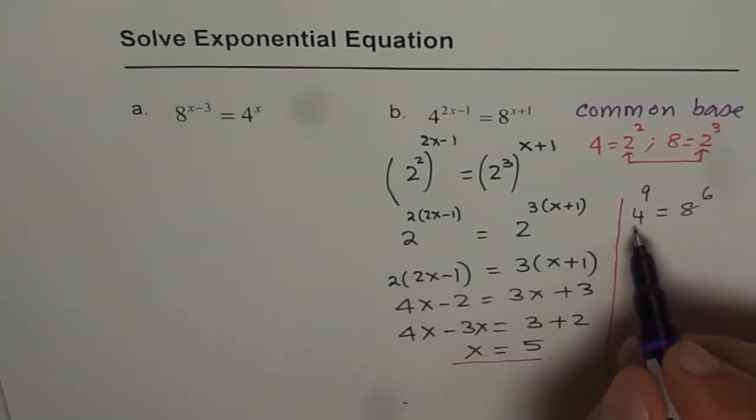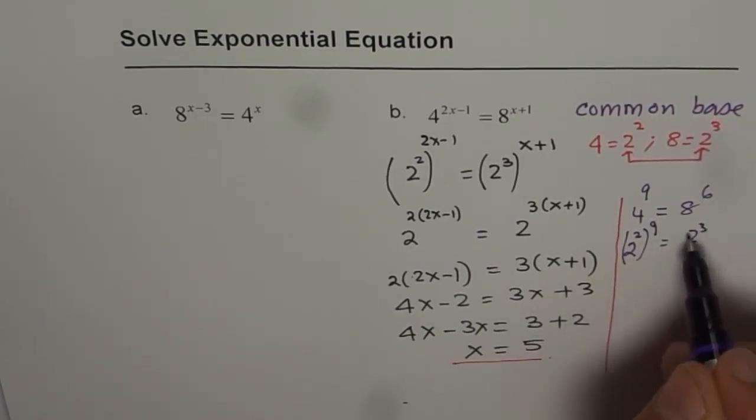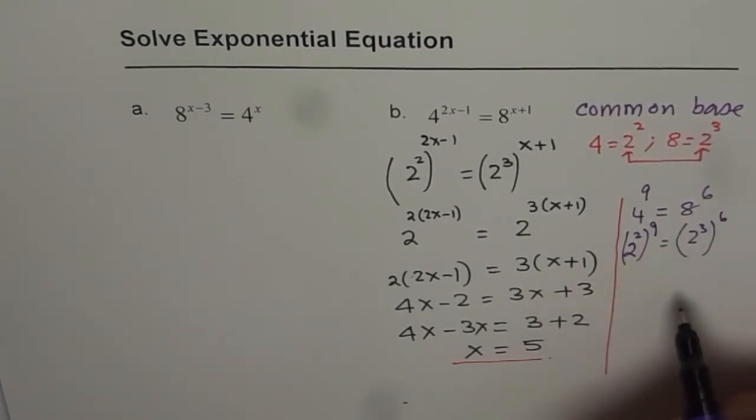If we follow this step, 4 is 2 squared. So 2 to the power of 2 to the power of 9. 8 is 2 cubed, right? 2 cubed to the power of 6. 2 times 9 is 18. So we get 2 to the power of 18 equals 2 to the power of 6 times 3 as 18. So indeed, they are same.